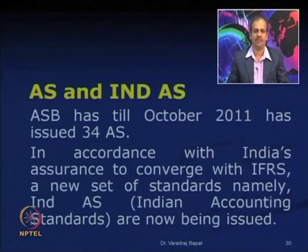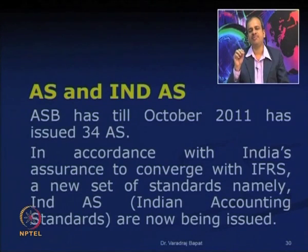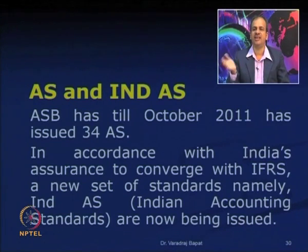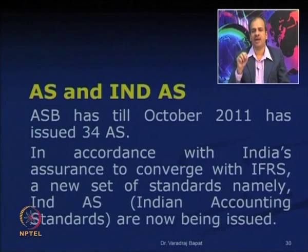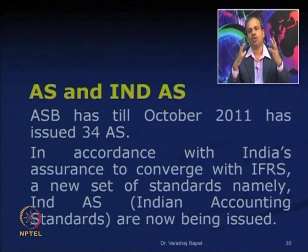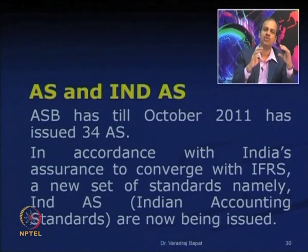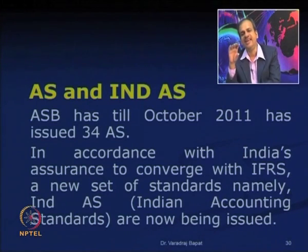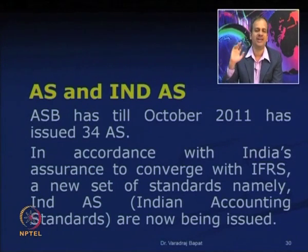ASB, till October 2011, has issued 34 accounting standards. Since there is a need to converge Indian standards with international standards, ASB is coming out with a new set of standards closer to international standards. Currently India has two sets of standards: the existing AS (accounting standards) and IND AS, which are new Indian standards closer to international standards.